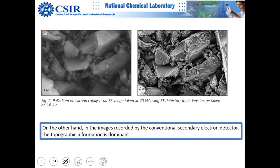An example showing palladium on carbon: the image taken using the Everett-Thorne detector at 20 kV compared to the in-lens image at only 1.6 kV shows that the in-lens image is much better quality, even though only one-tenth of the accelerating voltage is used.